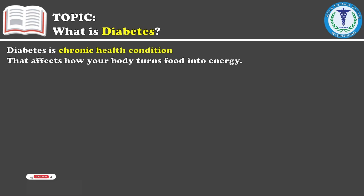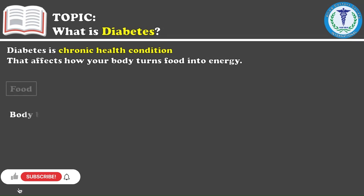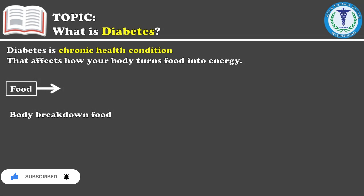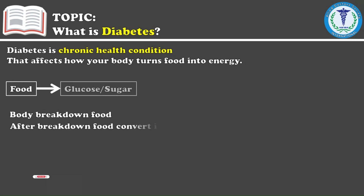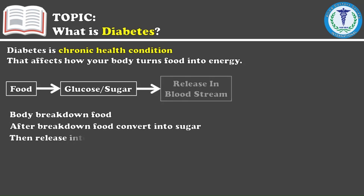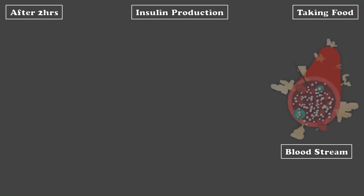To understand diabetes, it is important to understand the process in the body. When we eat something, it enters our body and is converted into glucose, and after that, this glucose is added to our blood, increasing the amount of glucose in the blood.